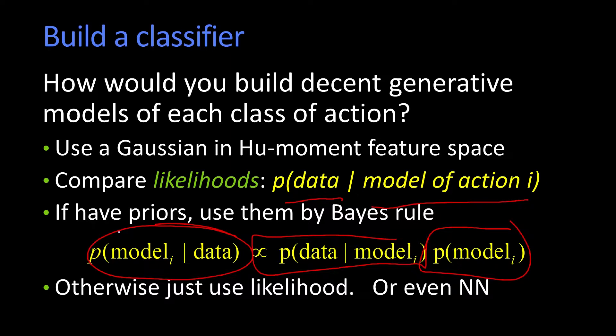If I don't have enough data to even build a reasonable model of the densities, I might just use something like nearest neighbor. The nice thing we have is that motion energy images and motion history images are sort of global descriptors. The way you do this is you collect these statistics on these global descriptors in order to do the recognition.